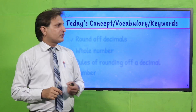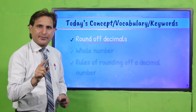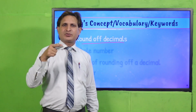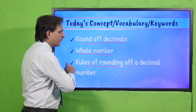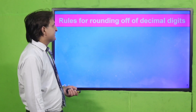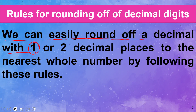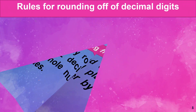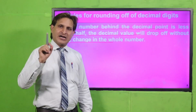आज के जो key points या concepts हैं जिनको हम again and again discuss करेंगे — Round off decimal। Whole numbers का आपको पता है कैसे round off करना है। आज हम decimal को सीखेंगे कि कैसे decimals को round off किया जाता है, और next whole numbers भी discuss होगा। Rules of rounding of a decimal number: We can easily round off a decimal with one or two decimal places to the nearest whole number by following these rules।